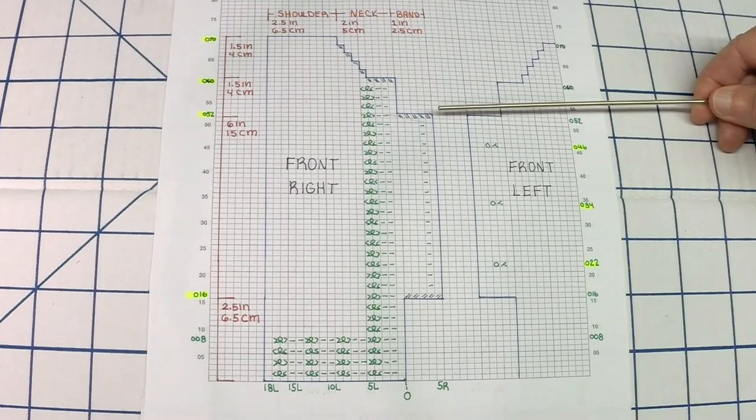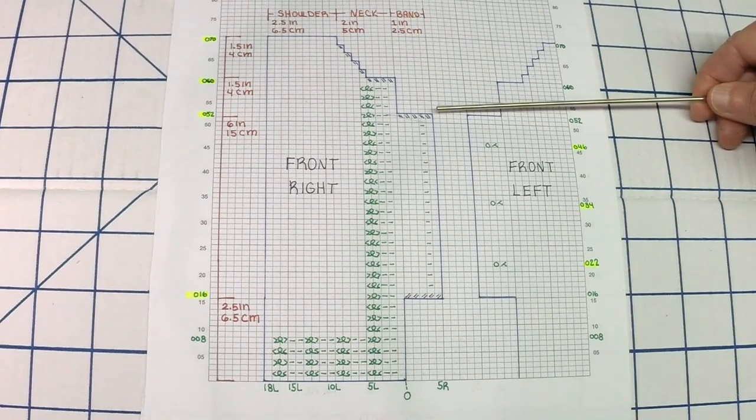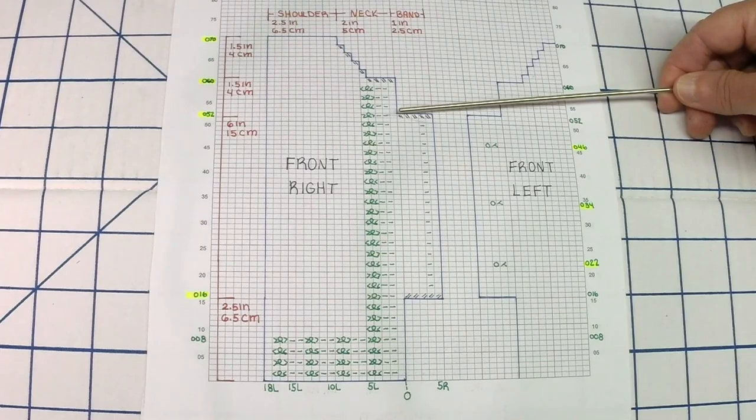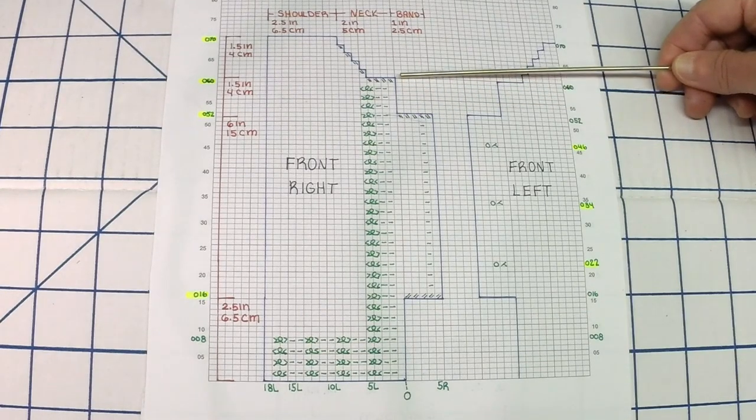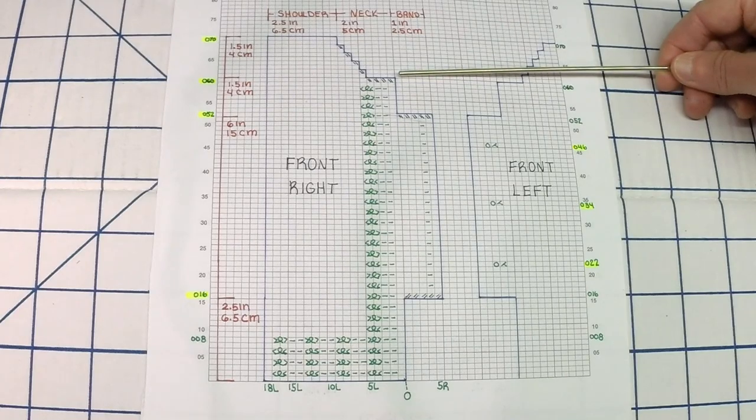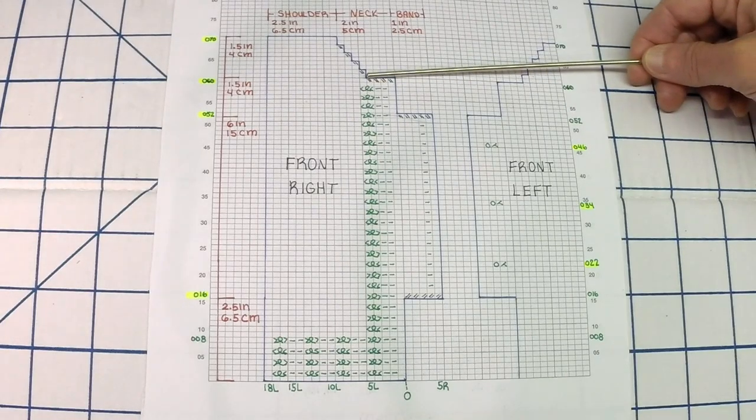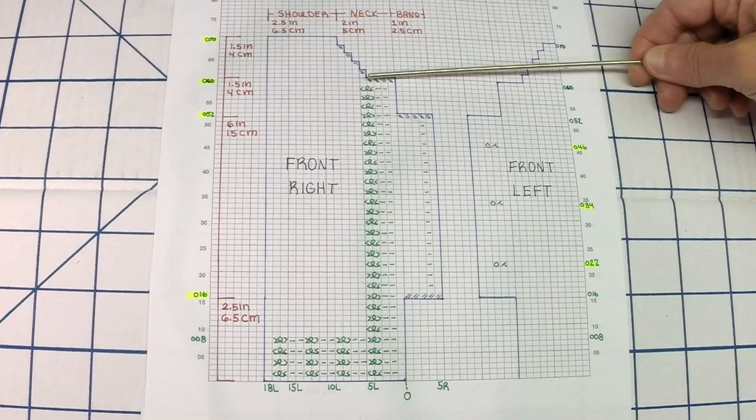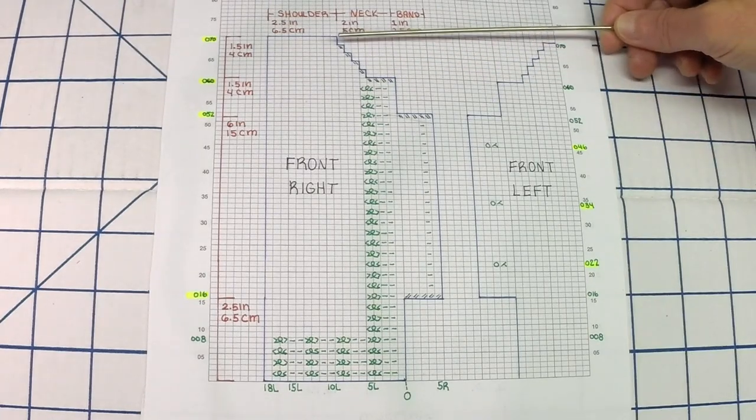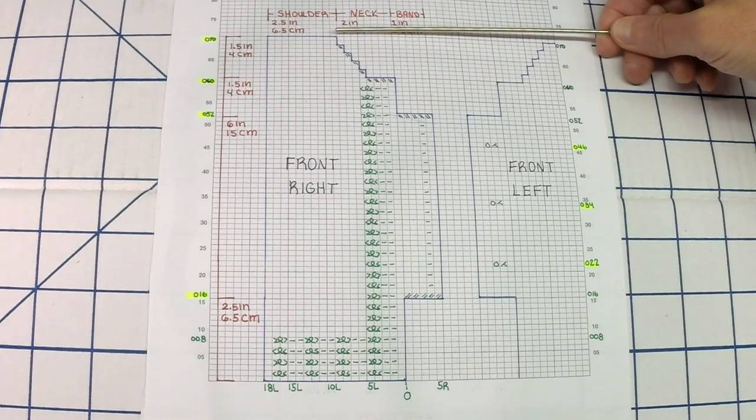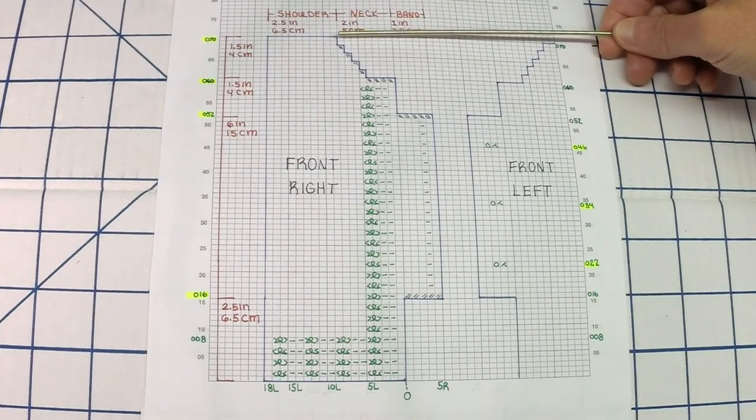Once you reach row counter 52 you're going to cast off 5 stitches to finish the top of the button band, continue in pattern to row counter 60, cast off 4 more stitches and then you're going to decrease one stitch every other row 4 times until you reach row counter 70 where you're going to cast off.